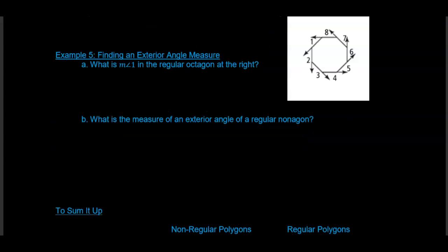One exterior angle of a regular polygon can be found by dividing 360 by n, the number of sides. Find the exterior angle measure of a regular octagon: 360 divided by 8 equals 45 degrees. What is the measure of an exterior angle of a regular nonagon? A nonagon has nine sides, so 360 divided by 9 equals 40 degrees.